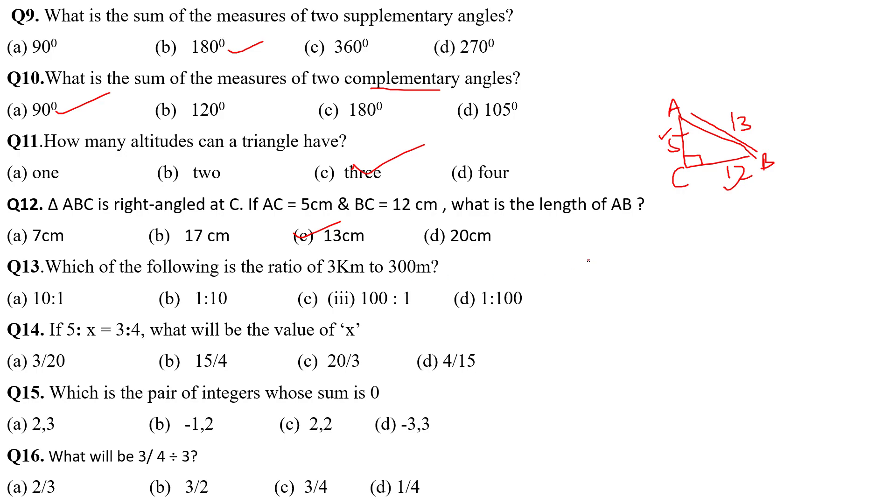Which of the following is the ratio of 3 km? 3 km means it is 3,000 m, right? And ratio with the 300 meter, it will be 10 is to 1. Two zeros cancel out there. Three tens are 30 and three ones are 3. Option A is the correct answer. 5 is to x is equal to 3 is to 4. What will be the value of x? No problem. It is 5 upon x in the fraction form. That will be equal to 3 upon 4. When you cross multiply it, 5 for the 20 and 3x is equal to 20, x is equal to 20 upon 3. C option is the correct answer. Which is the pair of integers whose sum is 0? Minus 3 and plus 3. Option D is the correct answer.